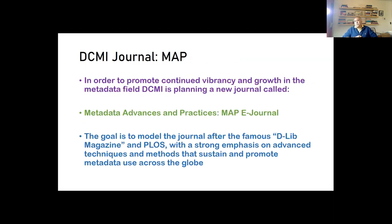For the quick announcement: in consultation with Sam and the DCMI executives, there is now a plan underway to launch a journal on metadata advances and practices called MAP. The goal is to develop it as a born-digital, purely online journal. It will be modeled after the popular journal Digital Library Magazine — similar to ACM Communications but published online — and also modeled on PLOS. Based on my experience with the JASIST editorship, I hope to help launch and develop this new forum for metadata advancement.